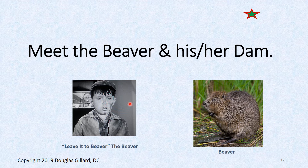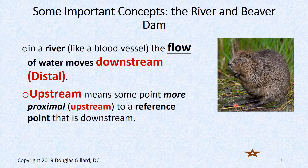The beaver — from the old show 'Leave It to Beaver' — is always getting into trouble. What do beavers like to do? They like to dam things up. Can you think of any relation to cardiovascular pathology? How about atherosclerosis and atherosclerotic plaquing — same thing. It dams things up. Or a tumor pushing on a blood vessel can dam it up. So in a river, flow moves downstream — that's a key concept.